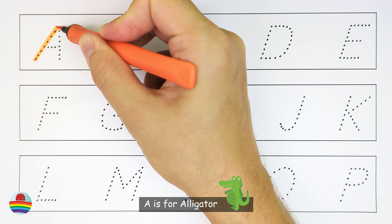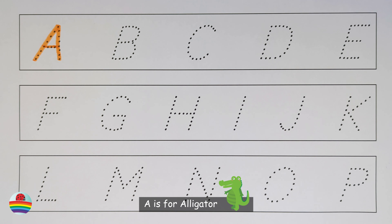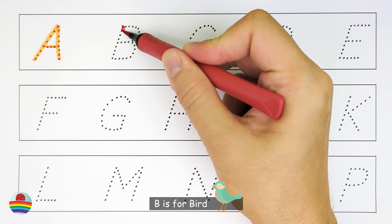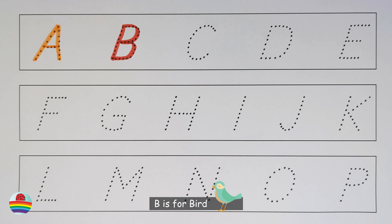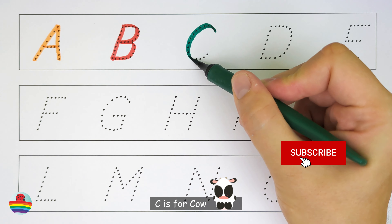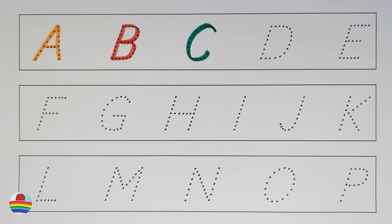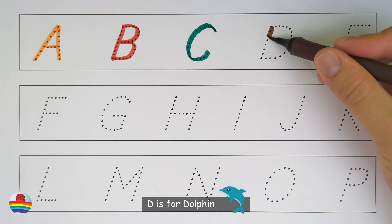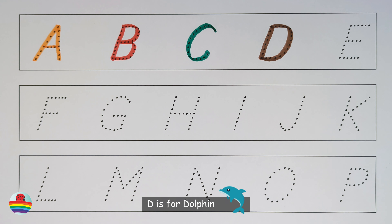A. A is for alligator. A. B. B is for bird. B. C. C is for cow. C. D. D is for dolphin. D.